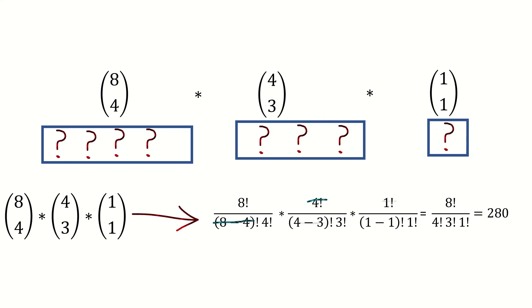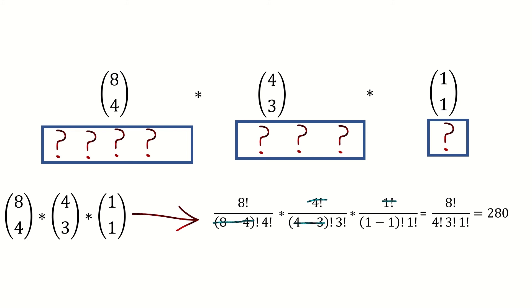Let's find this product. Notice how all of the numerators except for 8 factorial cancel out, while the denominator is the product of the factorials of the sizes of each subset. We're getting closer to our formula now, but we're not there yet.